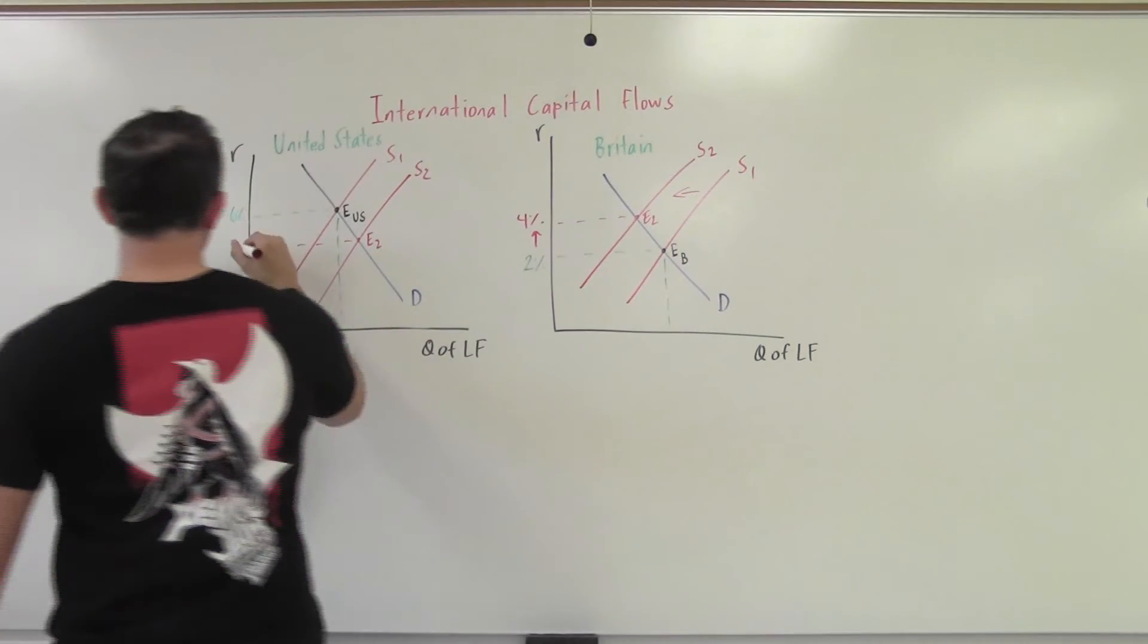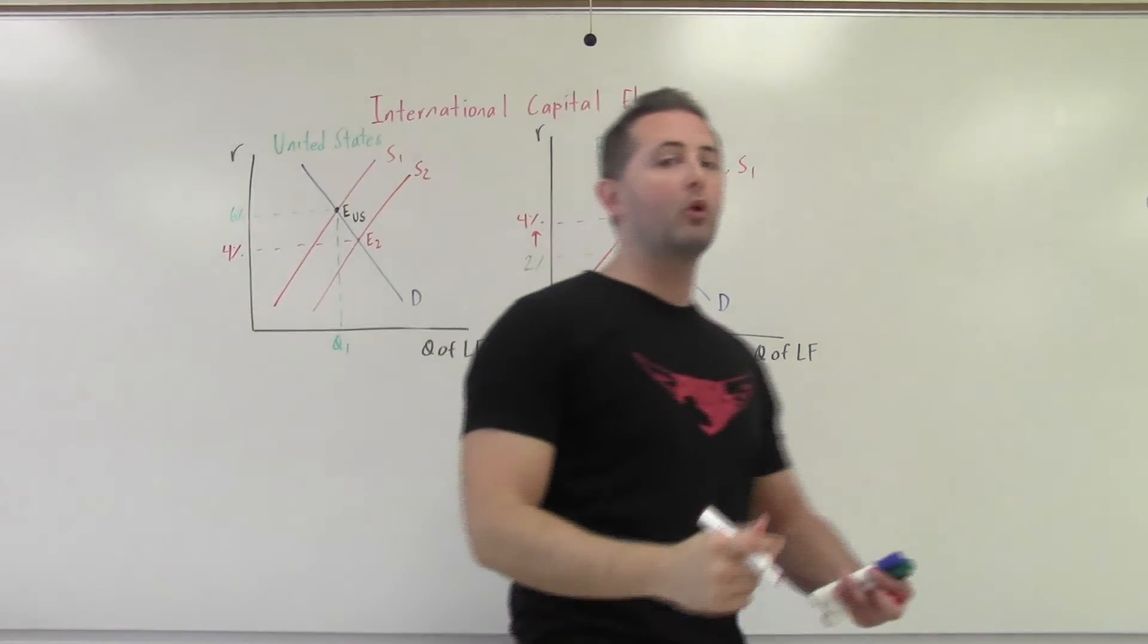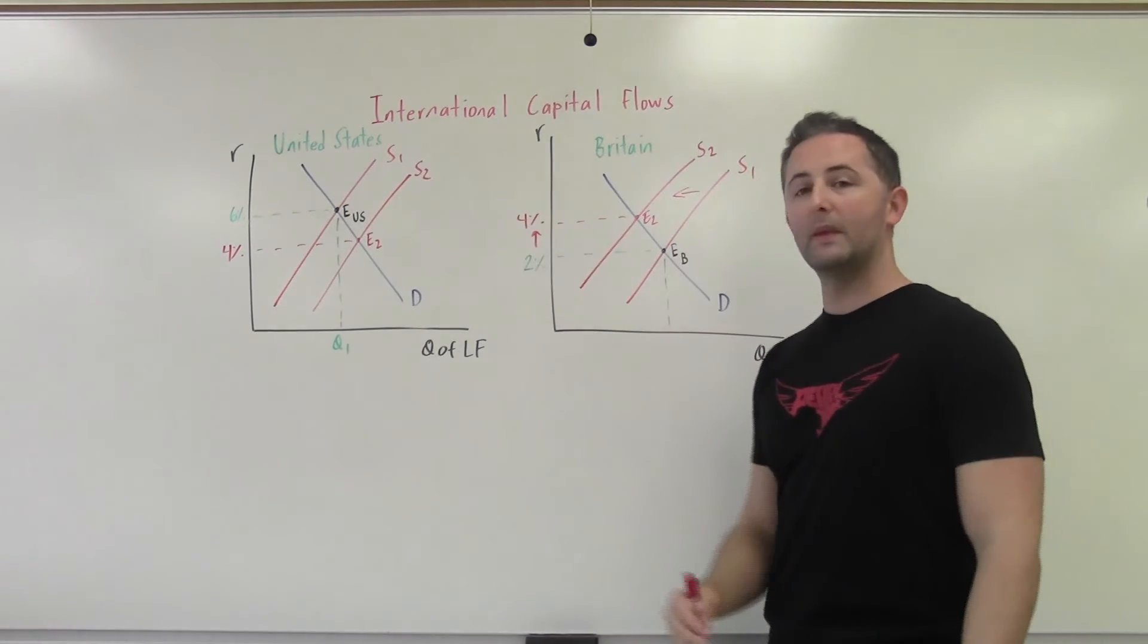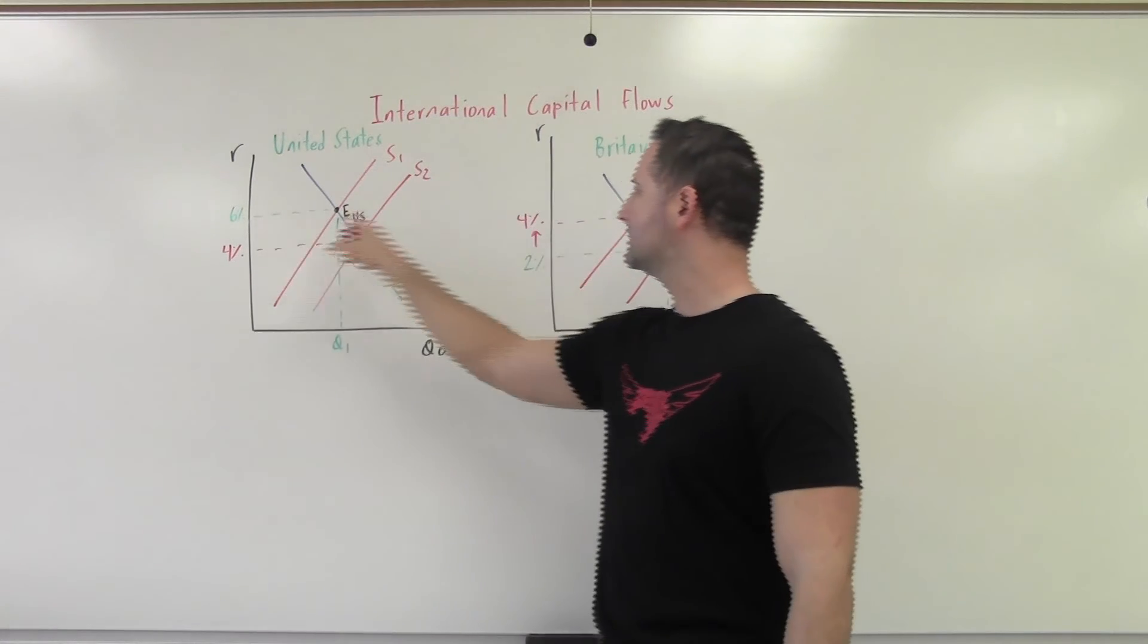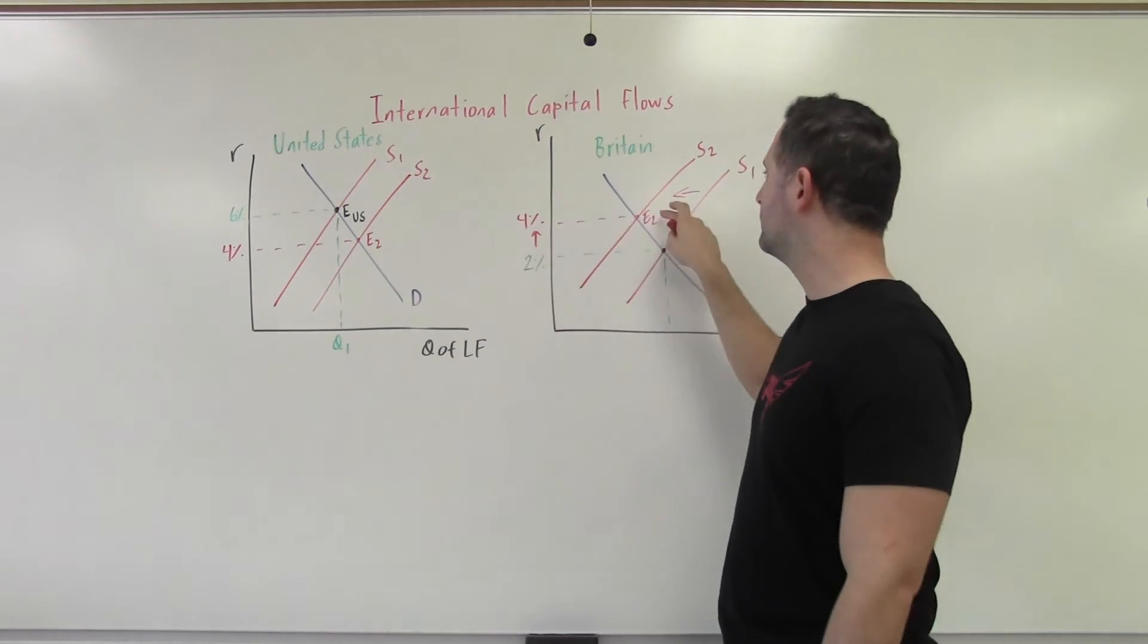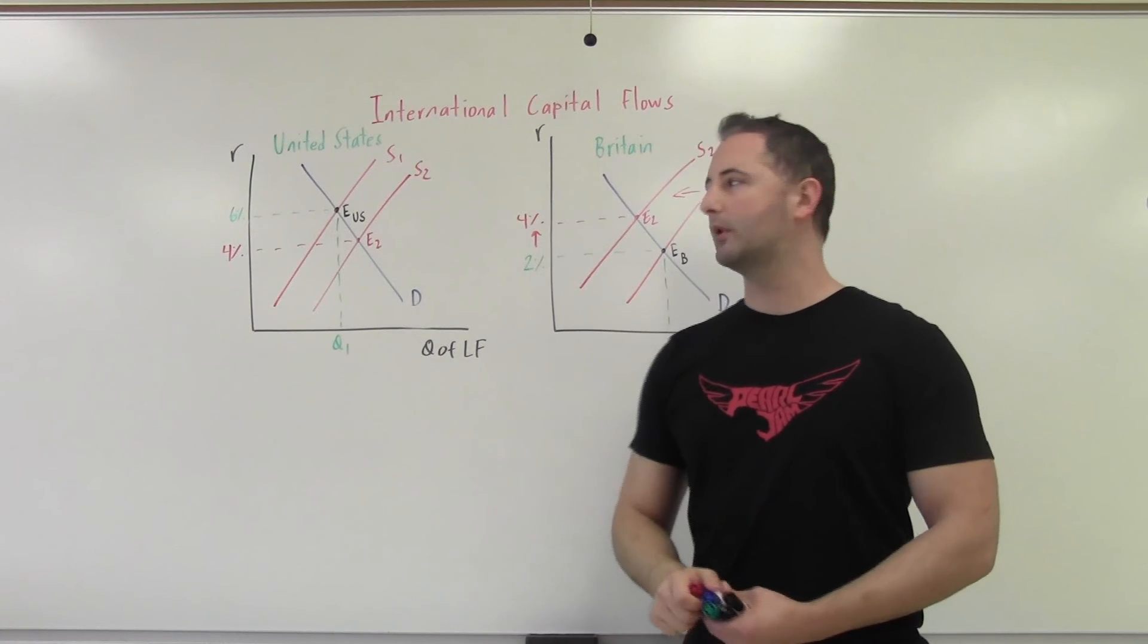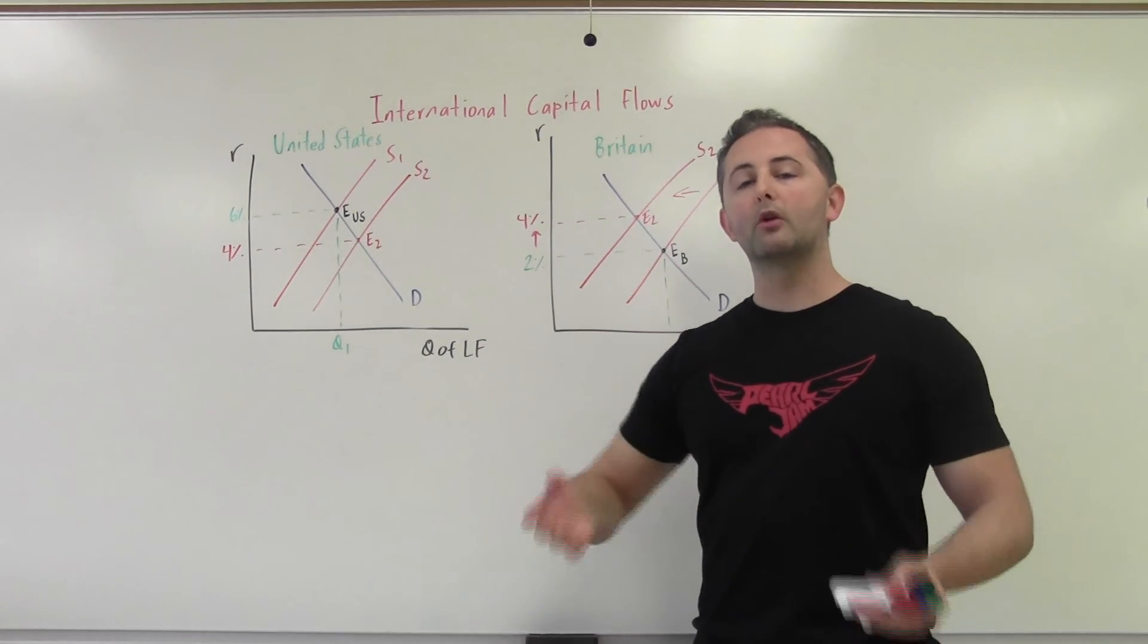And so the key thing isn't the number. It's not that it's 4% or 4.1 or exactly in the middle. That's not what matters. We're going to say that it's exactly in the middle in this class. What really matters is that these two interest rates are now equal. So now loanable funds in the US, we have a 4% interest rate, and in Britain, we have a 4% interest rate. Because we have international capital flows, these two interest rates are going to converge. They are going to come together.